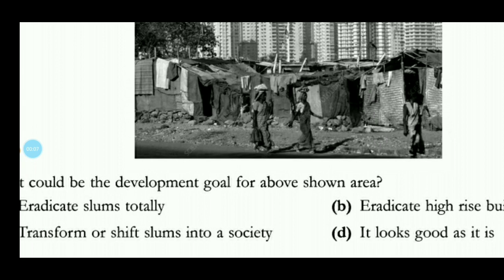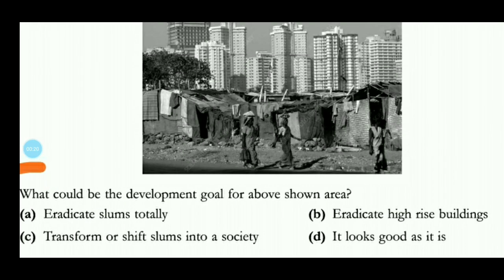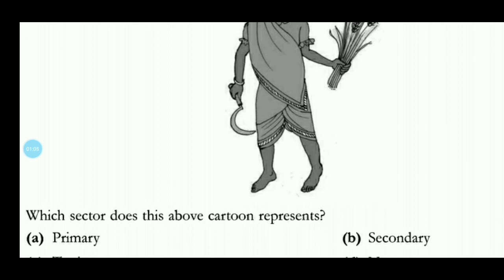The next question asks: what could be the development goal for the above shown area? The image shows slums. The options include eradicate slums totally, poor and backward people, eradicate high-rise buildings, and transform or shift into a society. Eradicating totally and poor/backward people are not correct. The best option is to transform or shift slums into a society. You eliminate incorrect answers and arrive at the correct one.